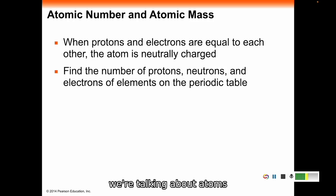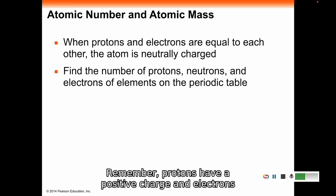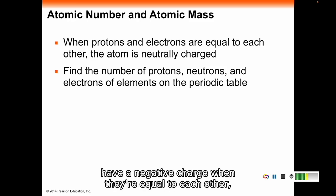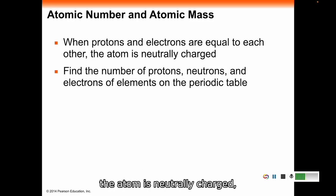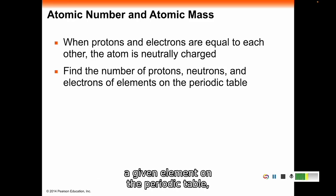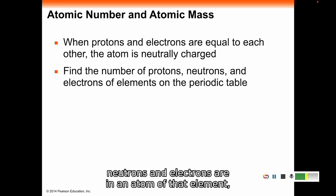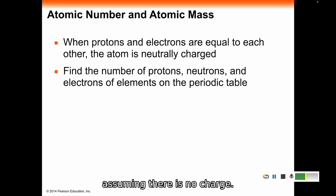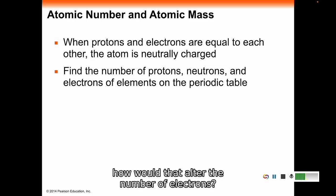Another thing that's important when we are talking about atoms is what kind of charge does that atom have. When protons and electrons are equal to each other, remember protons have a positive charge and electrons have a negative charge, when they're equal, the atom is neutrally charged. The pluses and the minuses balance each other out. When there are more protons, it's going to have a positive charge. When there are more electrons, it's going to have a negative charge. You should be able to look at a given element on the periodic table, given its atomic number and mass number, and be able to tell me how many protons, neutrons, and electrons are in an atom of that element, assuming there is no charge. Or if you alter the charge, how would that alter the number of electrons? We're not changing the number of protons or neutrons. We've either added or subtracted electrons, and that's how you give it a charge.